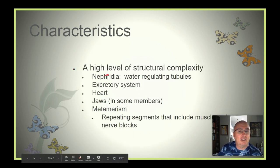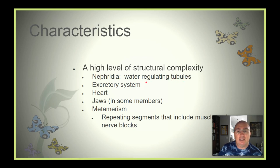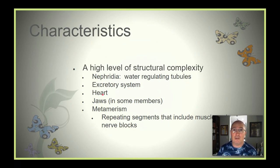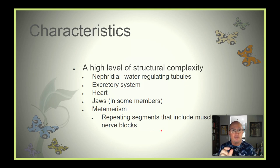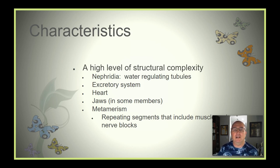They have a higher level of structural complexity. They can regulate their shape through water tubes. They have an excretory system. They have hearts, or something very similar to hearts — pseudo hearts — more than one. Some members have jaws. And metamerism — this idea of repeating segments or units that include their own muscles and nerves to help in many of their activities, including movement.